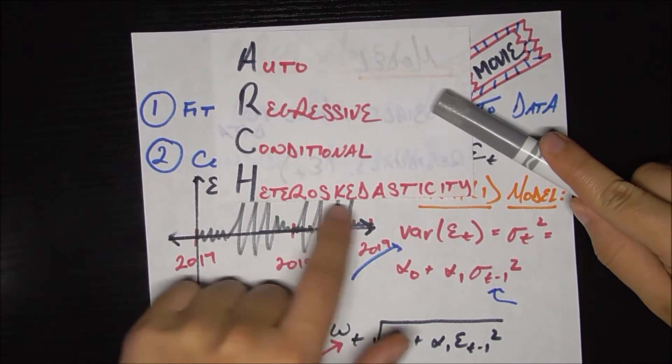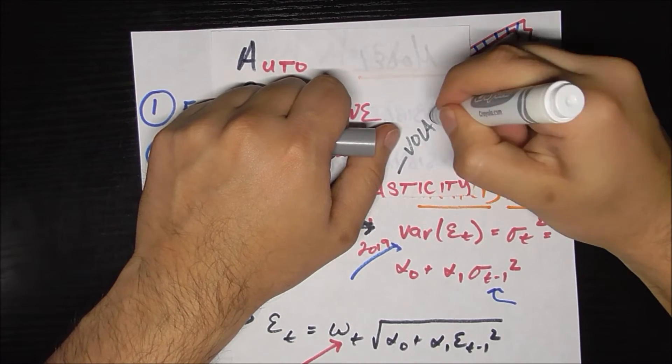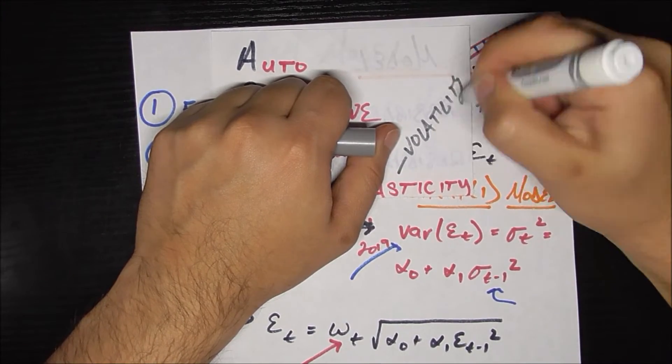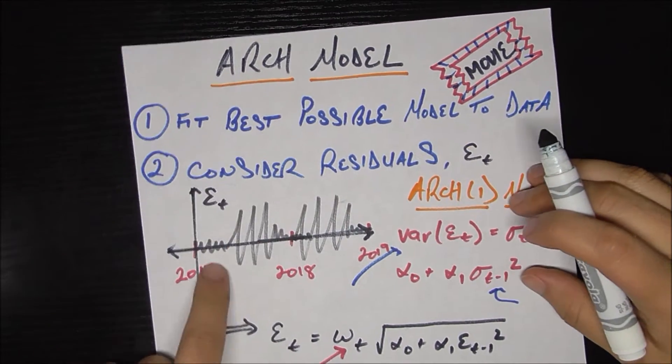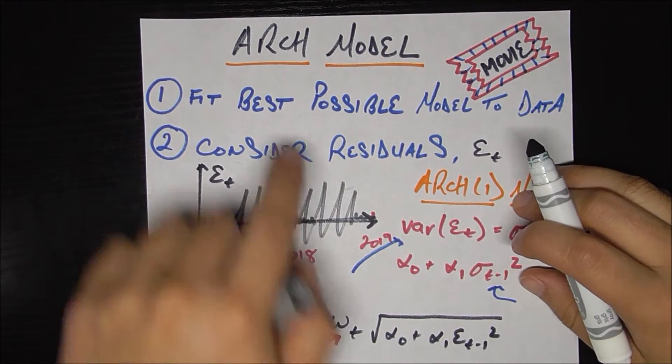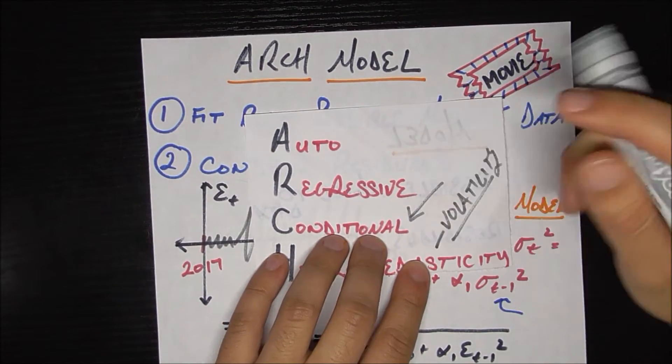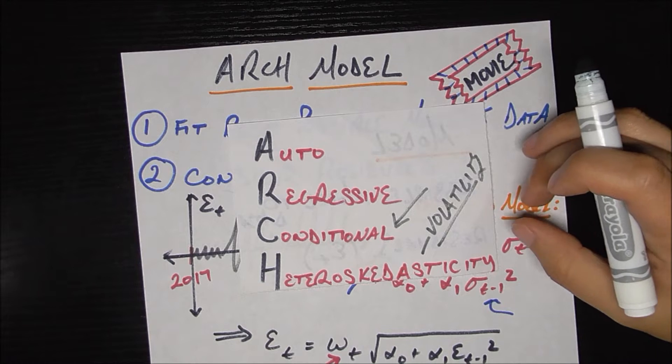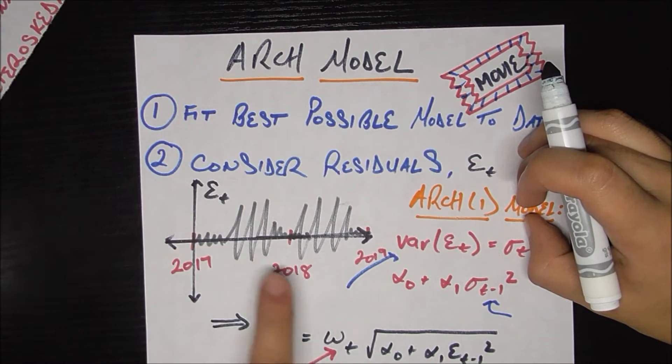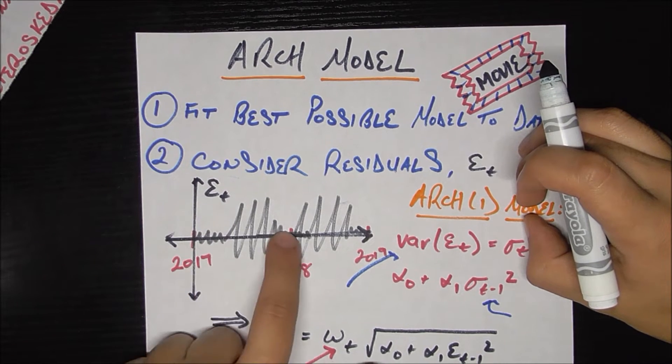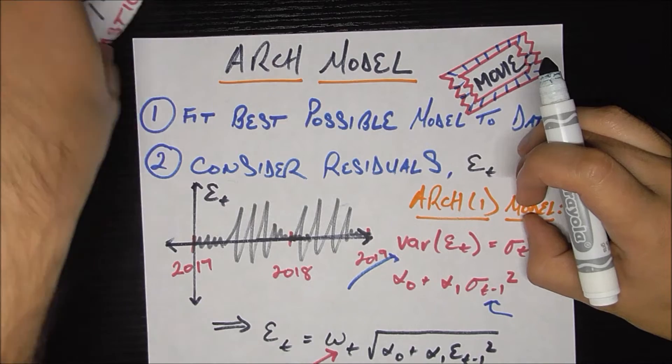The first one is heteroscedasticity. Big word, but what it really means is just volatility or standard deviation or variance. So any kind of just deviation. So we see that there's a lot of deviation here, a little bit of deviation here. That's where the next word comes in, which is conditional, which means that the volatility of your time series is not fixed over time. It's based on where you are at, which is very true here, right? The volatility is low at certain places and high at other places. So it's conditioned on something.